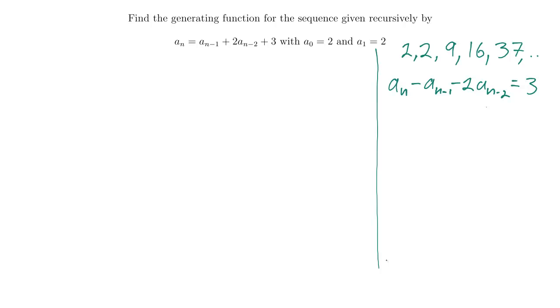Alright. Well, let's go ahead and try to solve using our recurrence relation technique. We'll say A is equal to, and write down the generating series, so that'll be 2 plus 2x plus 9x squared plus 16x cubed. That should be enough.